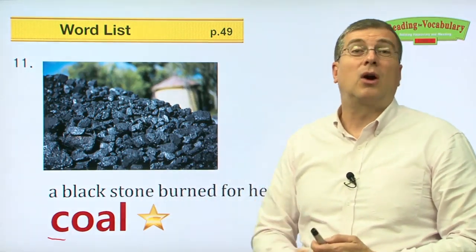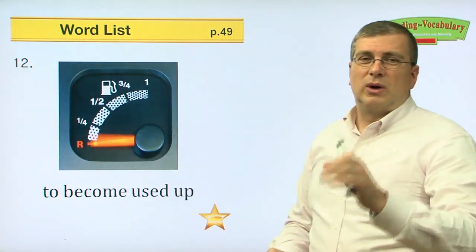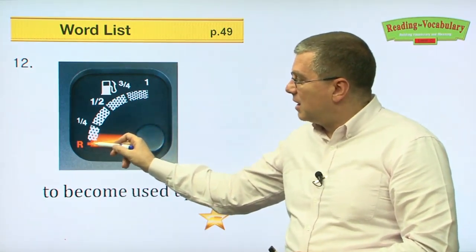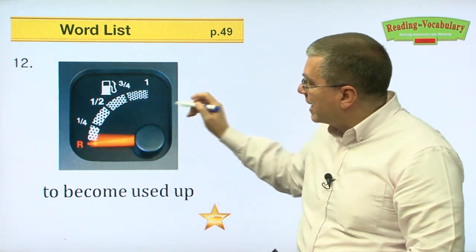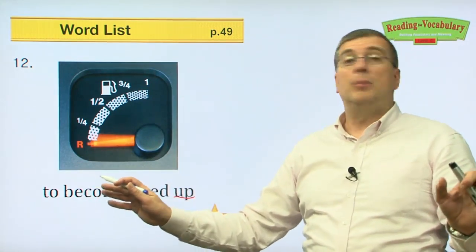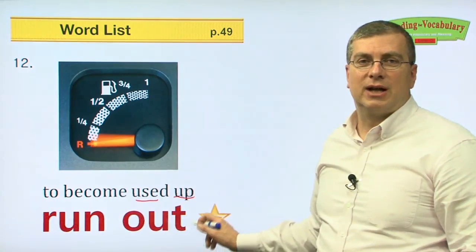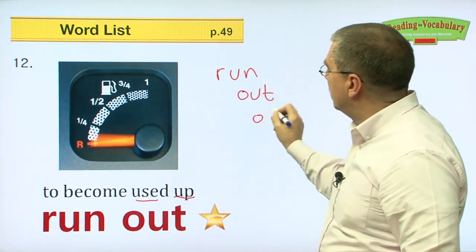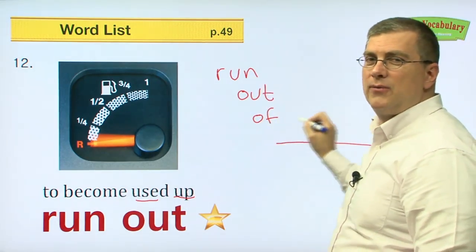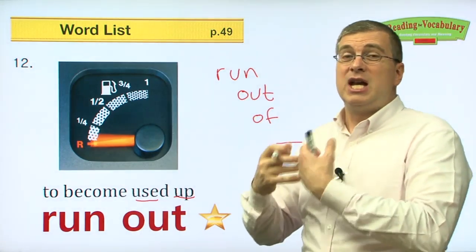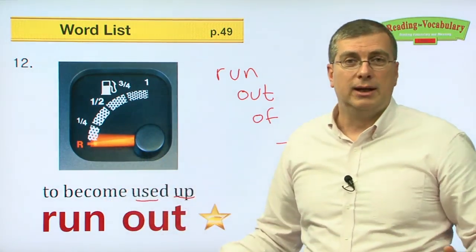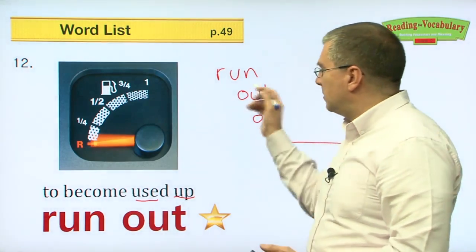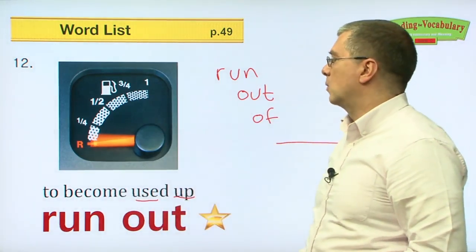Number twelve. You don't worry about this now — you're not driving. But when you get older, look at the gas gauge, because when you use up all the gas — no more, 다 없어요 — you have run out of gas. Run out of gas. Run out of food. Run out of water. That means you used it all up. Now it's all gone. We can use up all the water, all the food in the refrigerator, all the electricity. That means we don't have any more — 없어요.